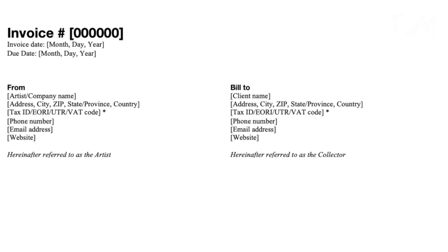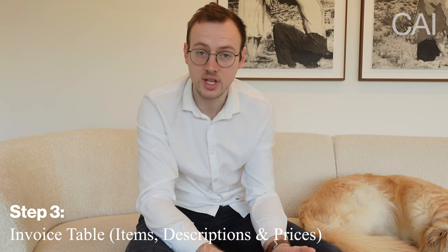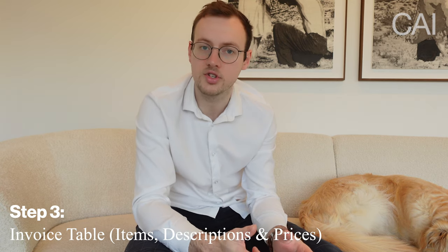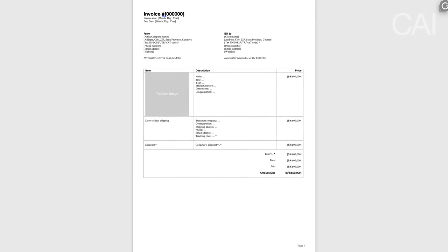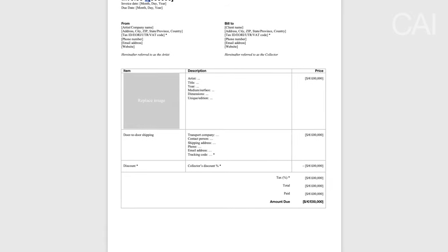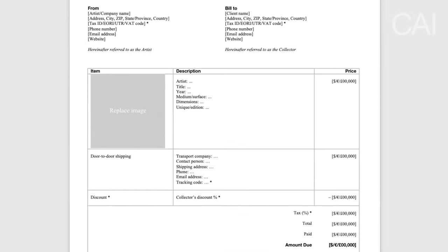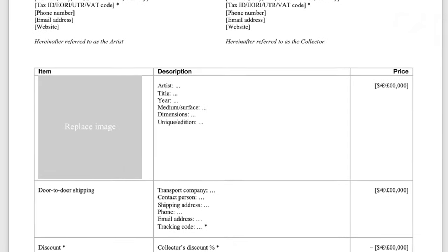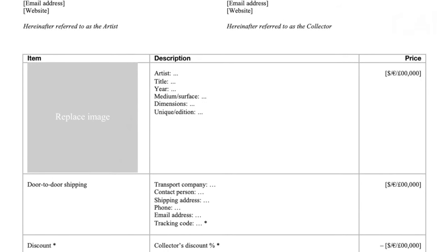Next to your invoice information, write the client's invoice information below 'Bill To.' Try to be as complete as possible, but if you don't have all the information, just their name, address, or email address can be sufficient. Step three is the invoice table with the items they're buying, a description of those items, and the price. This is in the middle of the invoice and arguably the most important part of the document. Make sure to include a thumbnail image of your artwork to avoid any confusion, and mention the complete metadata: artist's name, title, year, medium, surface, and dimension.